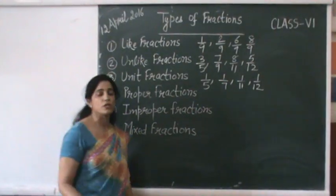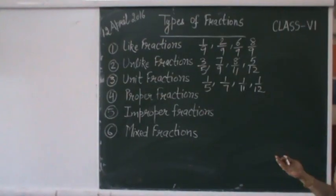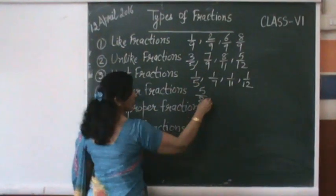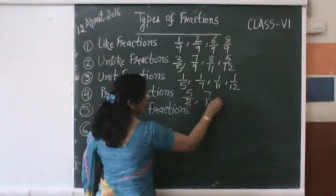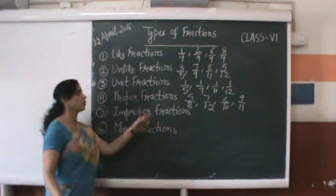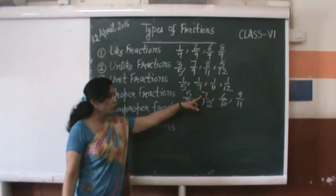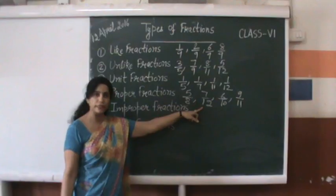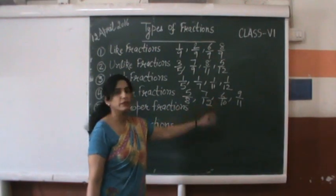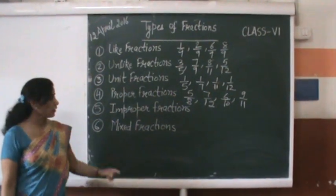Proper fractions. Fractions with the numerator smaller than the denominator are called proper fractions. For example, 5 by 8, 7 by 12, 6 by 10, and 9 by 11 are all called proper fractions, where numerator 5 is smaller than denominator 8, numerator 7 is smaller than its denominator, numerator 6 is smaller than denominator 10, and numerator 9 is smaller than denominator 11.